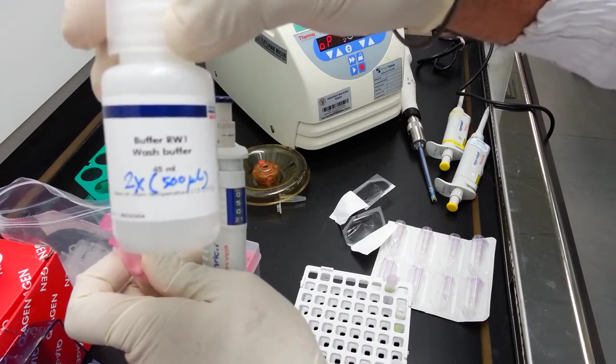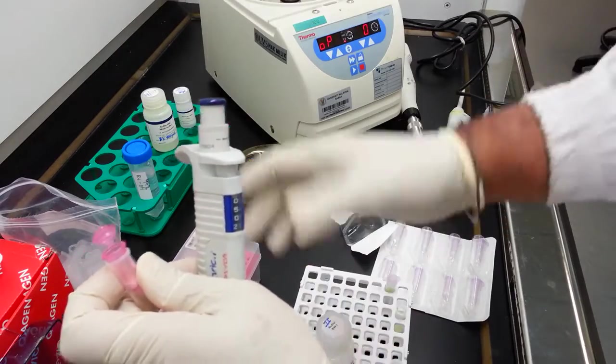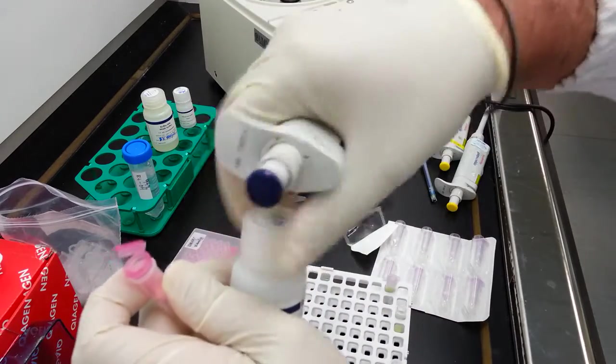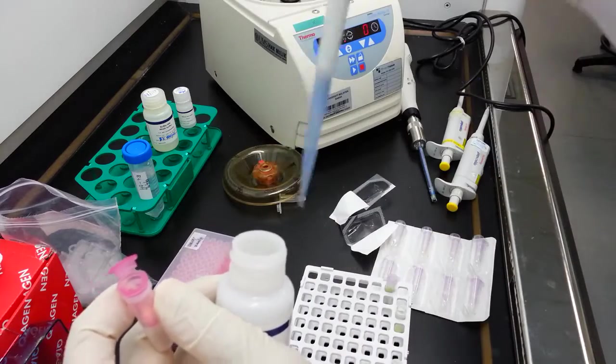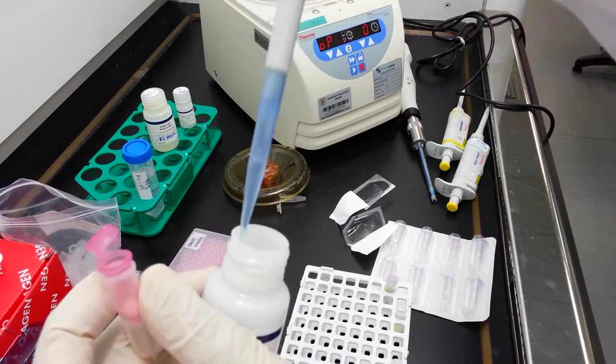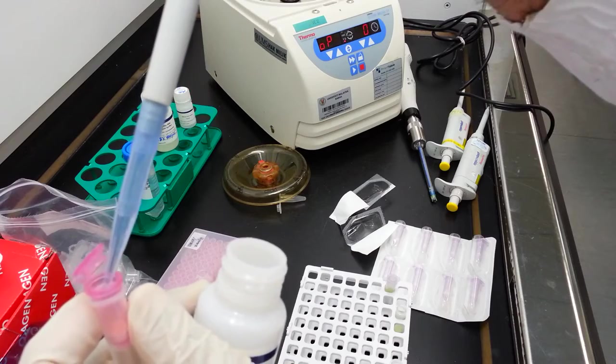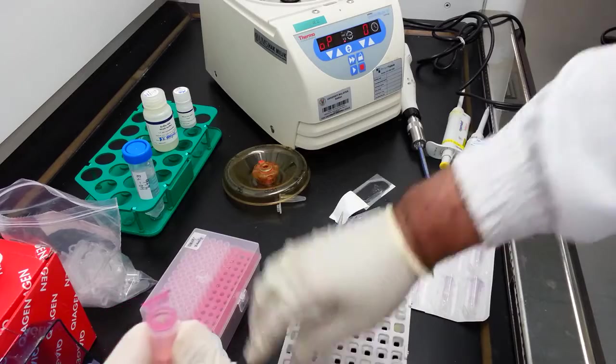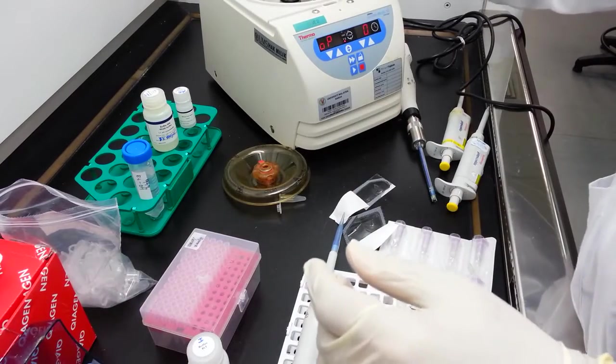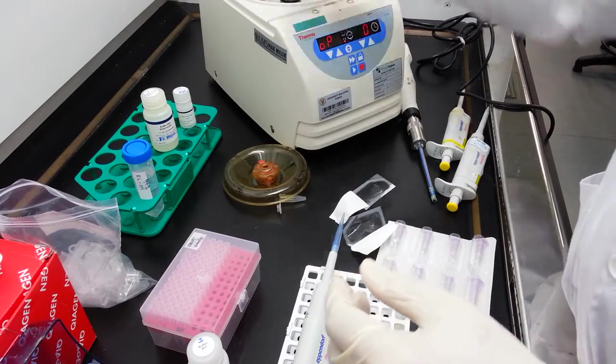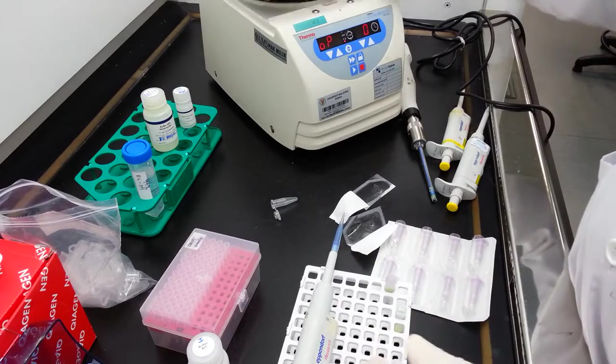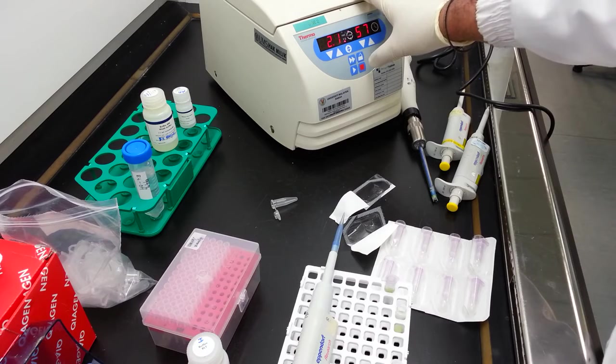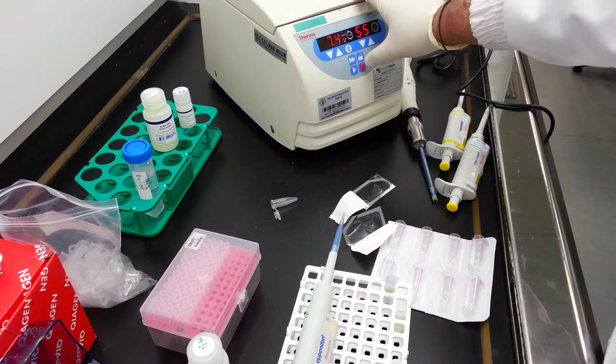This is buffer RW1. You need to transfer 500 microliters of buffer RW1 into the upper section of this tube. Spin down briefly for 15 seconds at 13,000 G.